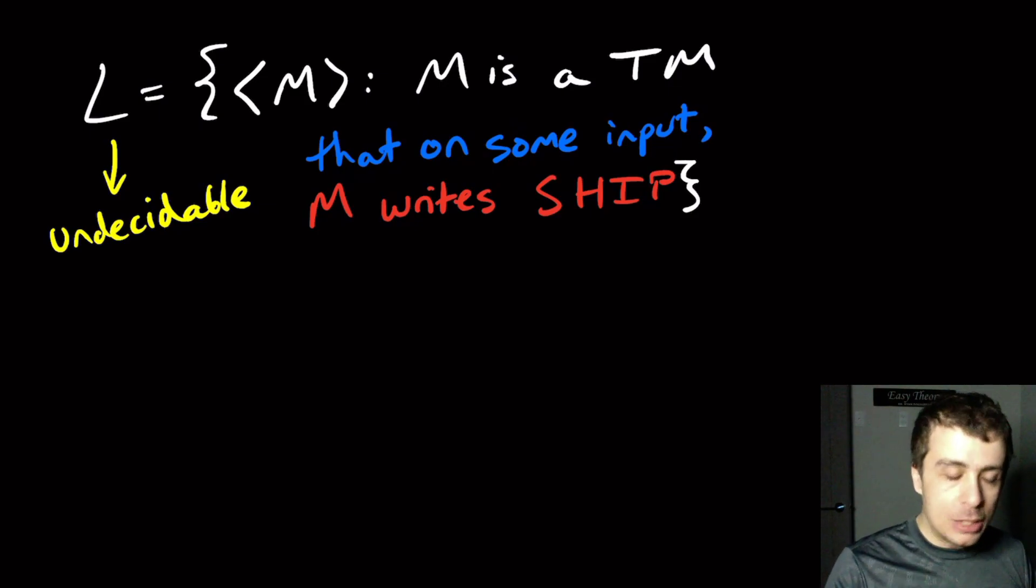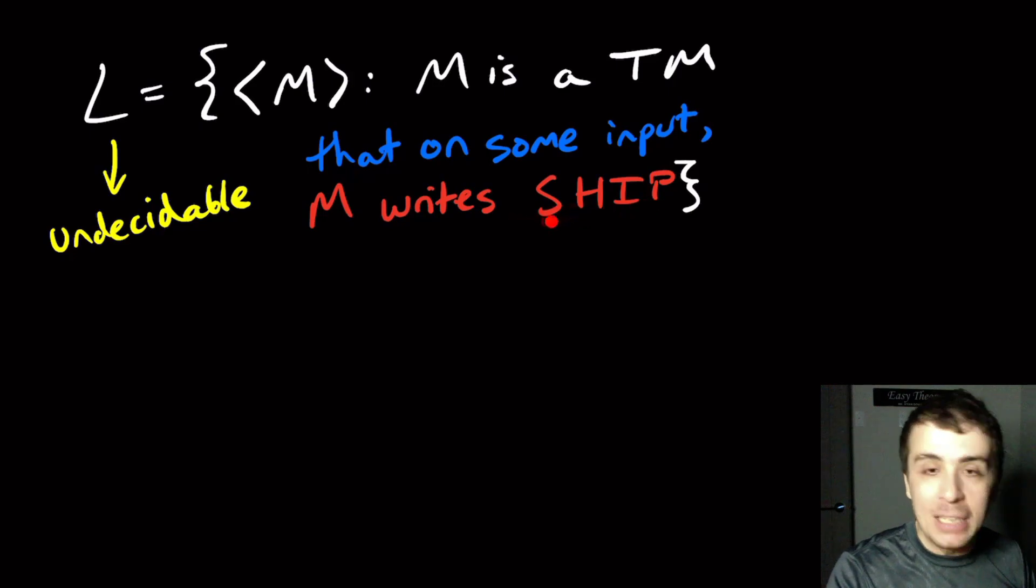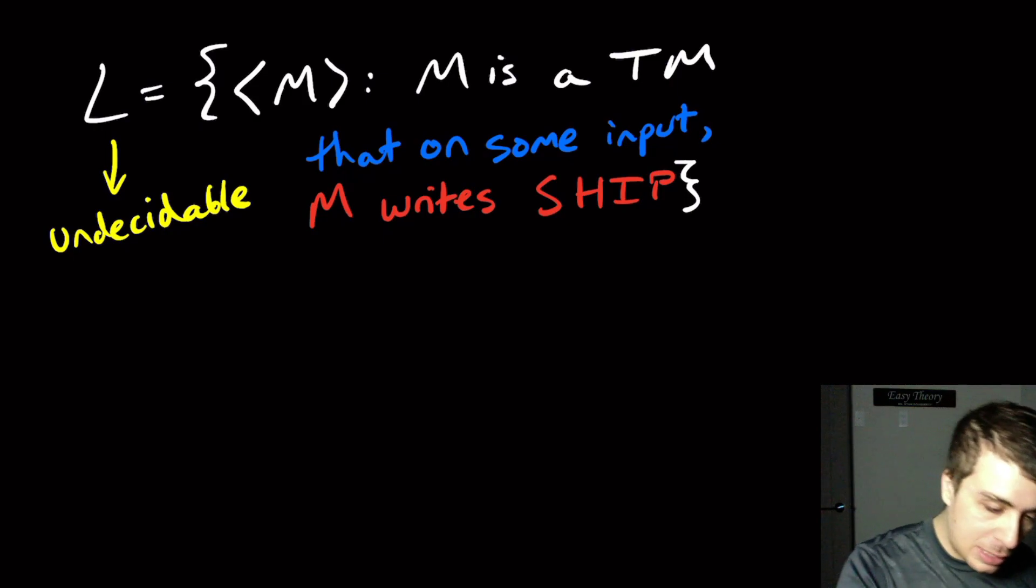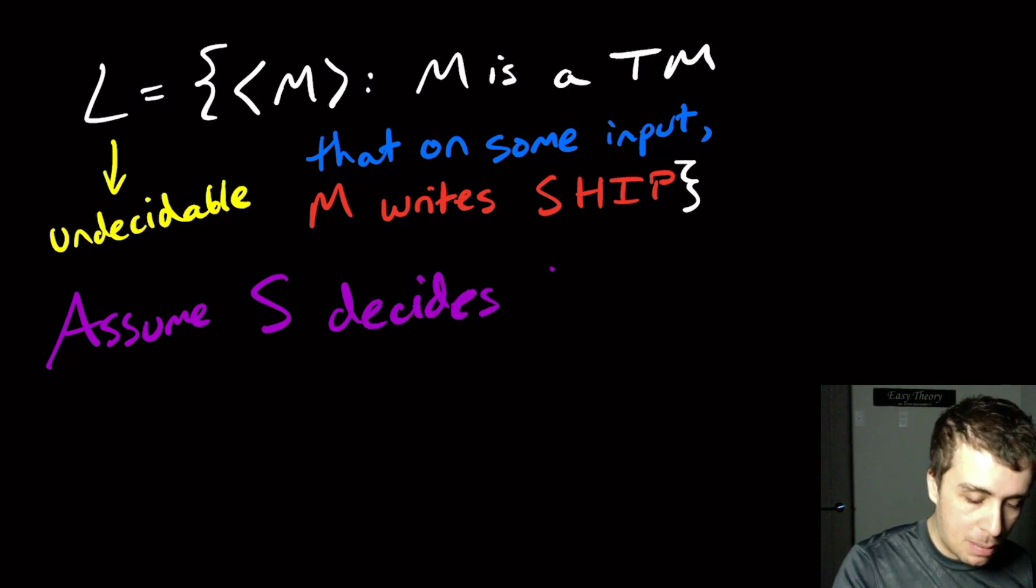Because what we can do is we say we're going to build a machine that has a non-empty language if it writes the word ship, and empty language if it doesn't write the word ship. So let's assume that S decides this problem L.